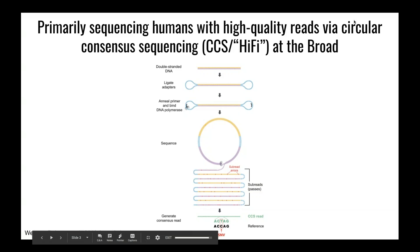Primarily, the Broad has been interested in using the new SQL2 instrument to generate the CCS, or what's now called the HiFi reads. If you're unfamiliar with this data type, briefly: a long double-stranded DNA fragment is isolated from the genome. Circular bell-shaped adapters are ligated to either end, and then a polymerase is affixed to the structure, which begins sequencing in a circle, displacing previously sequenced bases as it goes along, resulting in a pattern of forward and reverse sub-reads with the circular adapter interspersed. The adapters are easily computationally removed and all of the sub-reads are collapsed into a single high-accuracy consensus sequence.